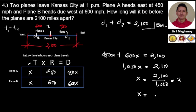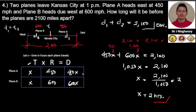So X equals 2 hours. To check if our answer is correct, we substitute back: 450 times 2 equals 900, and 600 times 2 equals 1200. The sum of 900 and 1200 is 2100, which equals the other side of the equation. So our answer is confirmed: X equals 2 hours. It will take 2 hours before Plane A and Plane B are 2100 miles apart.